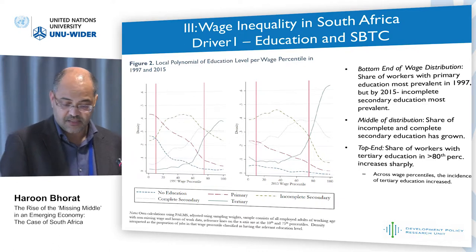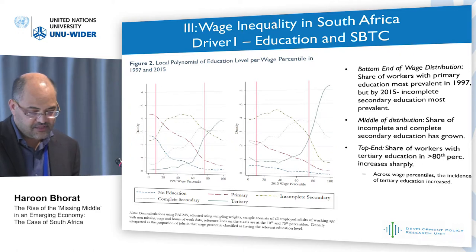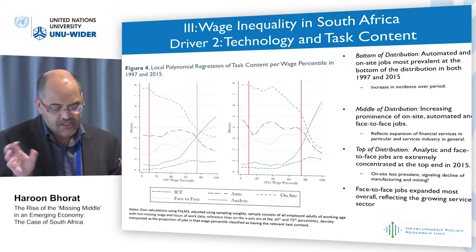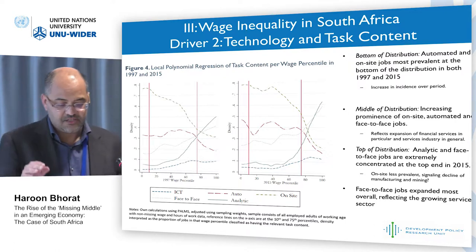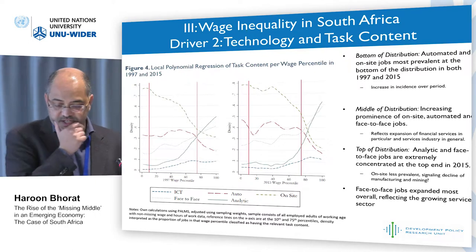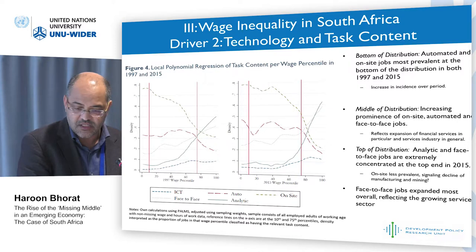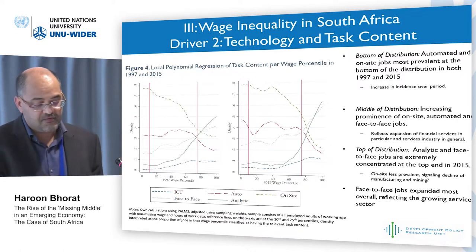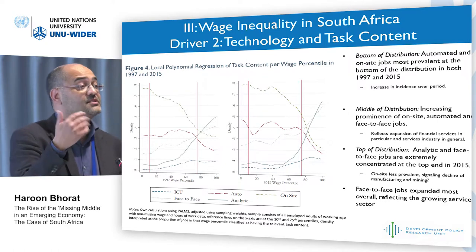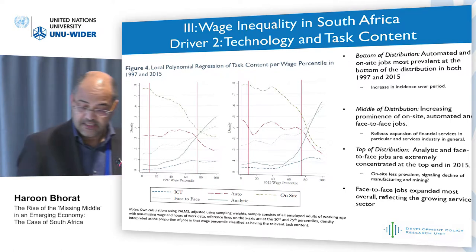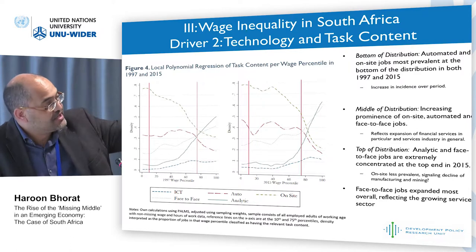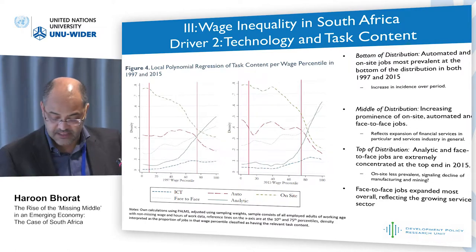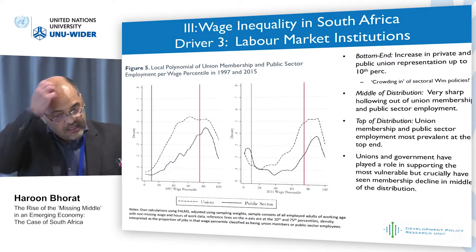Taking the second explanation targeting the middle of the distribution, we look at task content — ICT, face-to-face, on-site, and so on. Again, left panel is 1997 and right panel is 2015. At the bottom, automated and on-site jobs are prevalent in both years. In the middle, there is an increased prominence of on-site, automated, and face-to-face jobs, reflecting the rise of the services economy. At the top end, the green line shows a spike in analytical jobs — driven by the growth of the financial and business services sector as well as face-to-face type jobs.